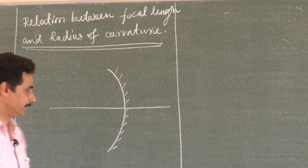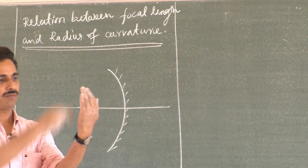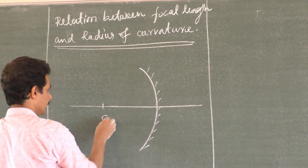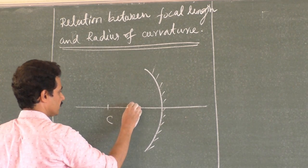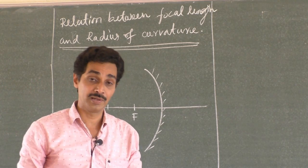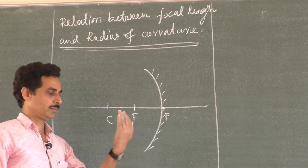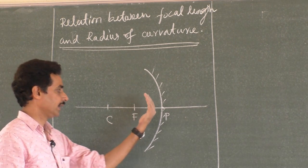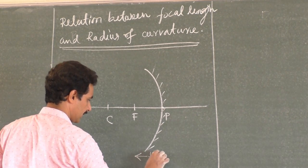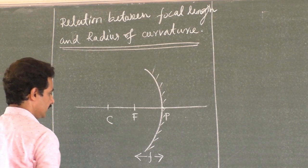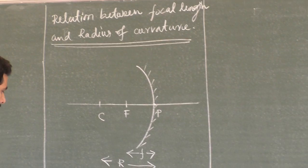We have a concave mirror whose curvature is part of a sphere. If you complete it, you get the center. Parallel rays incident on the concave mirror, very close to the axis, pass through the focus after reflection — they really pass through the focus. The midpoint of the mirror's reflection area is called the pole. Distance from pole to focus is focal length, and distance from center to pole is radius of curvature R.